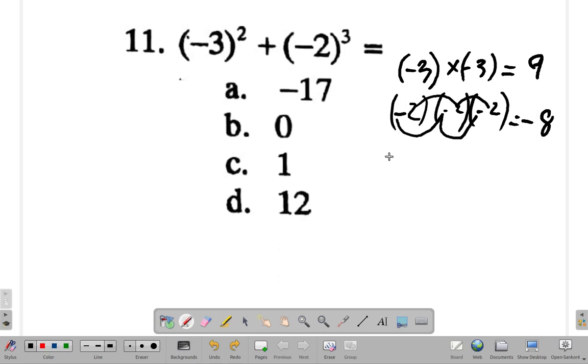So what you have is 9 plus negative 8. 9 plus negative 8 is 9 minus 8, which is 1. So the answer is C.